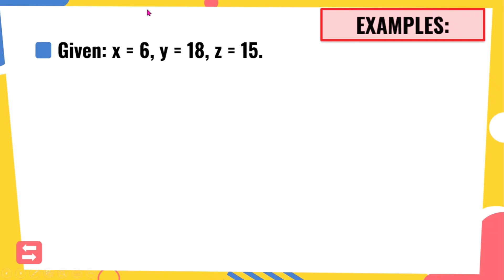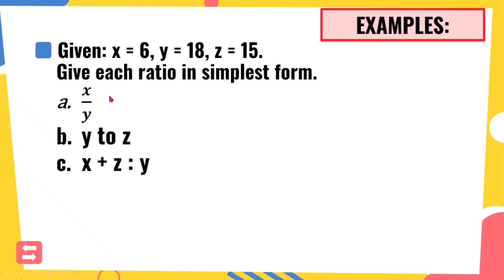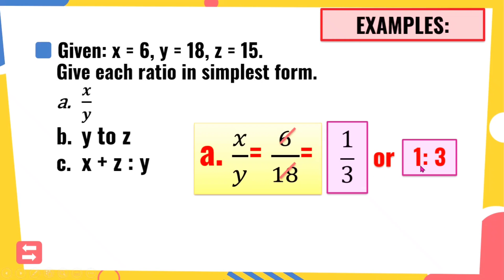Let's have our given. X is equal to 6, Y is equal to 18, and Z is equal to 15. Ito natin is to give each ratio in simplest form. Gagamitin natin itong mga given na nandito sa taas. Unahin natin itong letter A, X over Y. So substitute natin yung X, which is 6, then yung Y, which is 18. I-simplify lang natin or i-lowest term lang natin. 6 over 18, anong number ang pwede i-divide sa kanila pareho? Pwede silang i-divide sa 6. 6 divided by 6 is 1, and 18 divided by 6 is 3. So therefore, the simplest form of 6 over 18 is 1 thirds, or 1 is to 3.